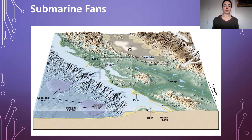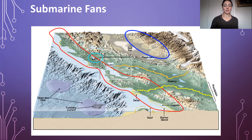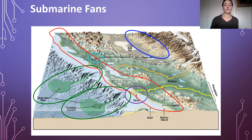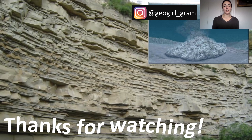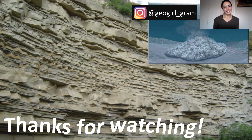To recap, we've gone over alluvial fans, fluvial environments, lacustrine environments, shoreface environments, deltaic environments, and submarine fan environments. The next videos will cover estuarine, eolian, and glacial environments. If you want to watch them all in the intended order, click the depositional systems playlist below. Thanks for watching — see you next time!